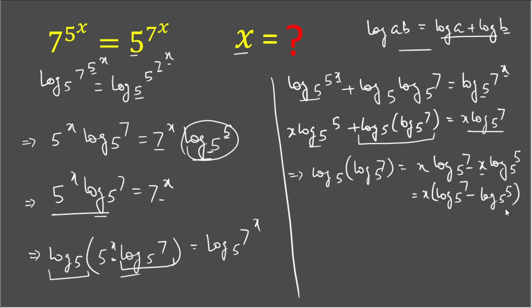The base of both logs is 5, so log base 5 of 7 − log base 5 of 5 is in the form log a − log b, which equals log(a/b). So the right-hand side becomes x · log base 5 of (7/5).